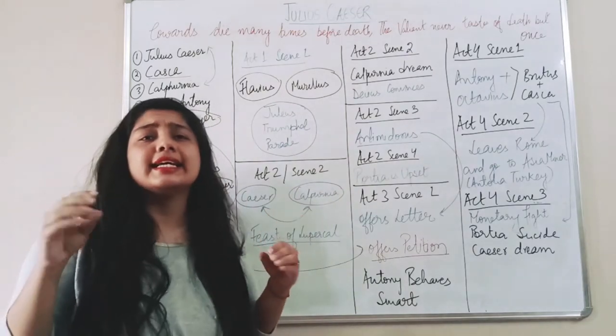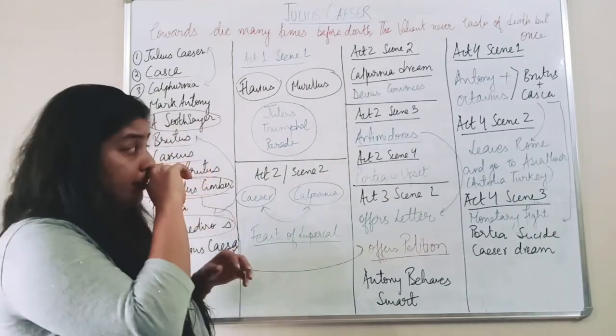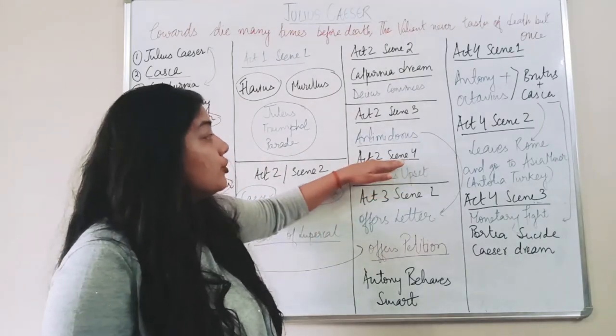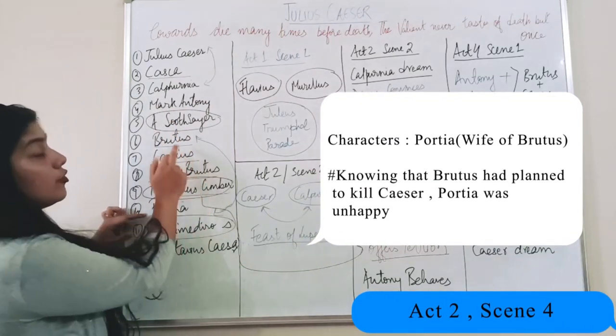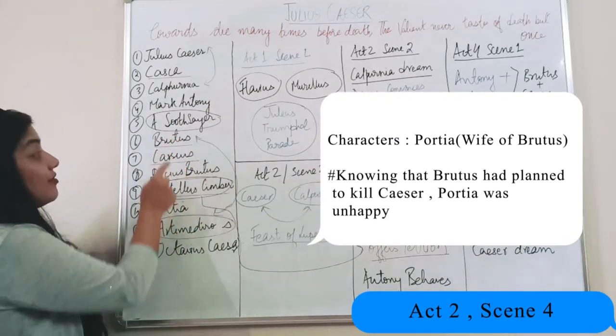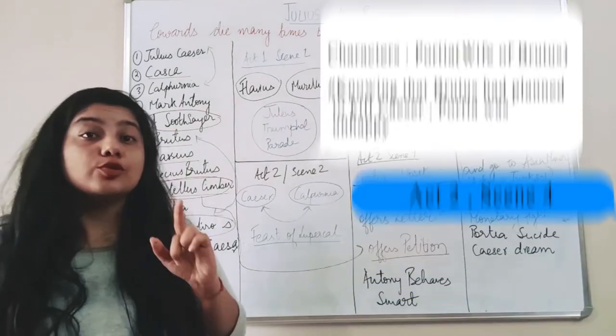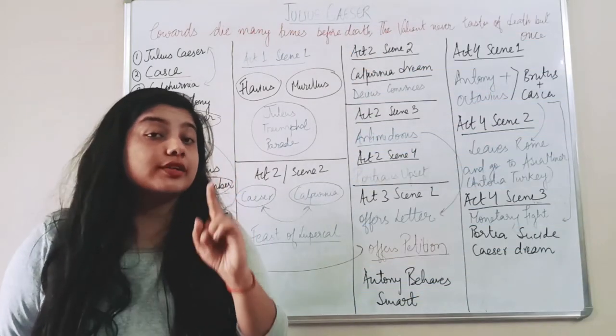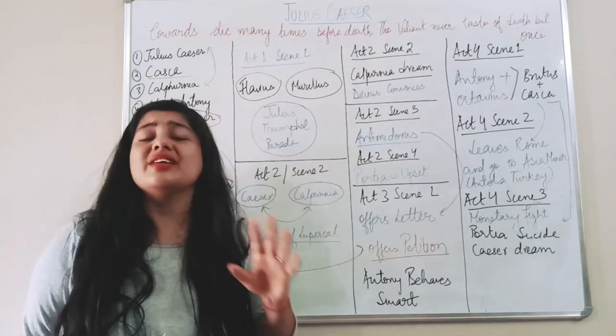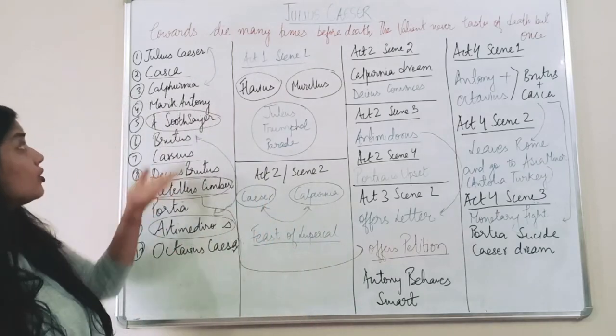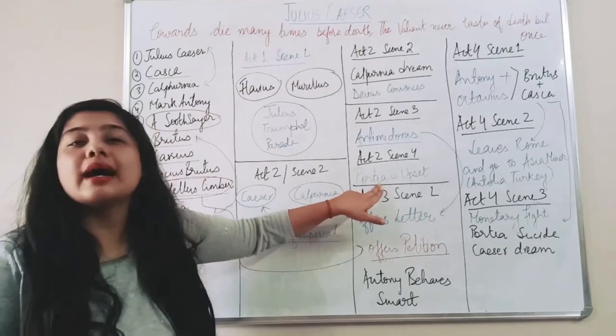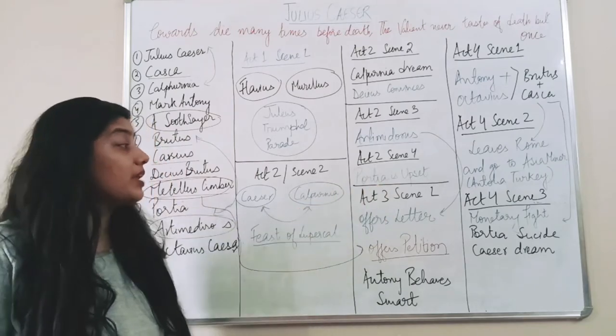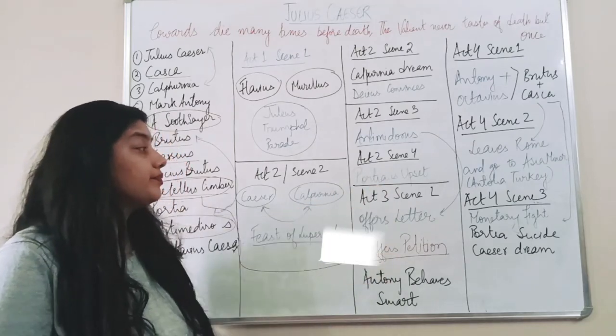But Caesar is in a hurry, he refuses to read the letter. Now Act 2 Scene 4. Portia, as I told you Portia is the wife of Brutus. She is aware of the plan of Brutus that Brutus has some extraordinary plans towards Caesar and she is very upset because she knew that both of them were friends and now Brutus is plotting against Caesar. So Portia was unhappy and she was upset regarding this.